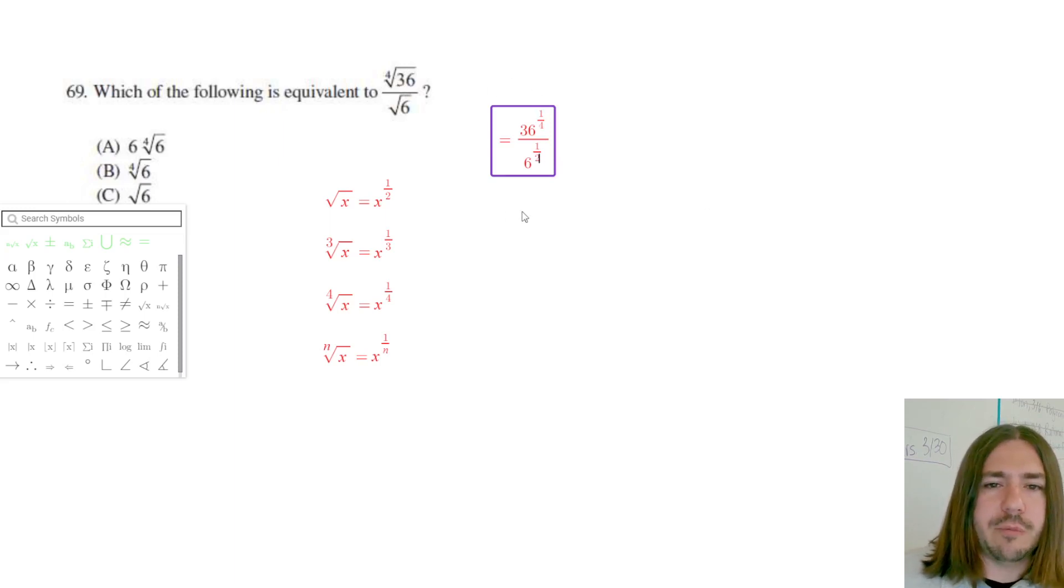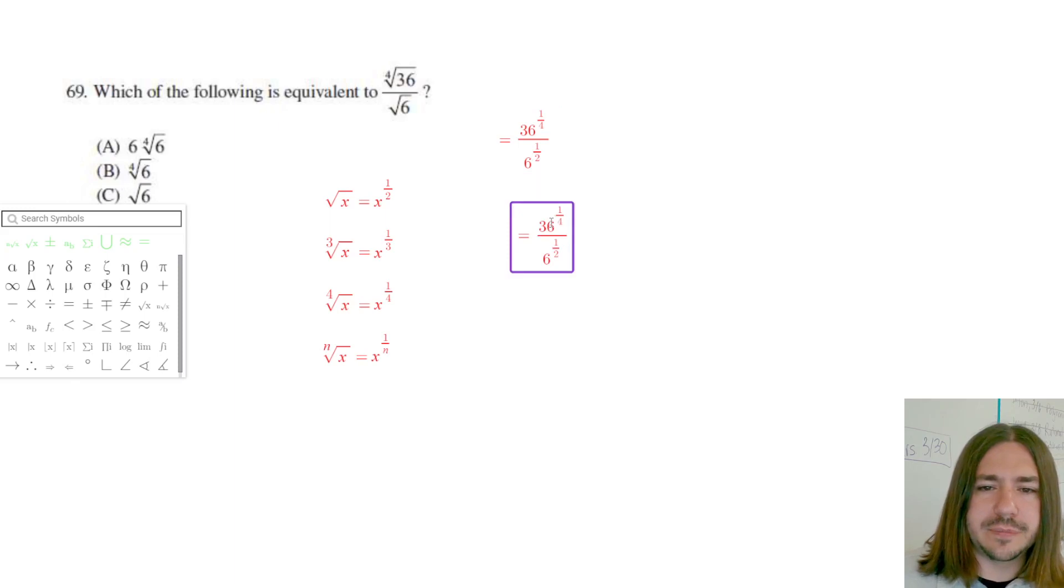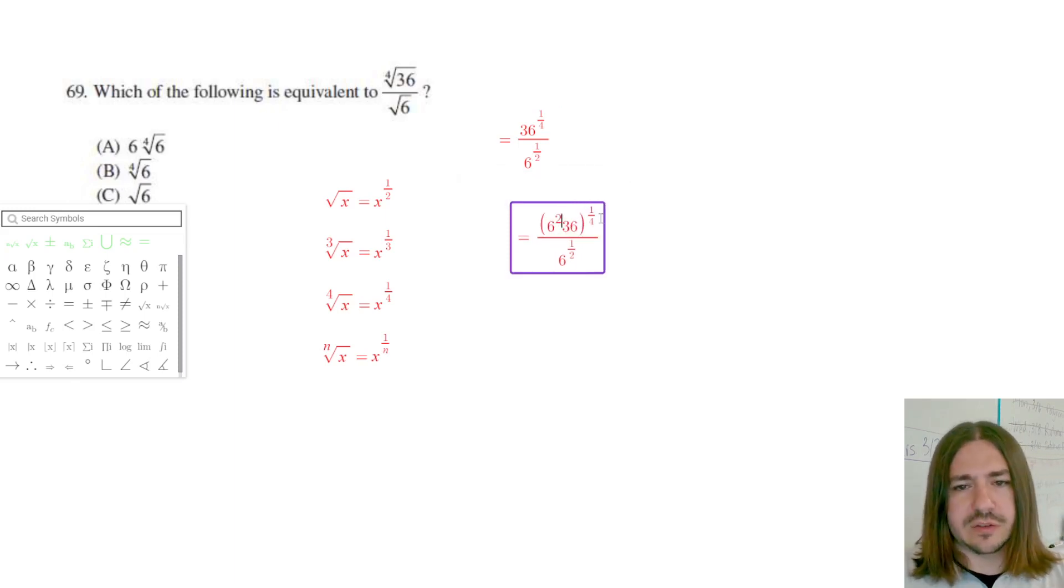Now, the reason why I'm rewriting it like this is because I want to take advantage of the exponent properties I know. So 36 is the same thing as saying 6 squared. So I'm going to replace that 36 with a 6 squared.